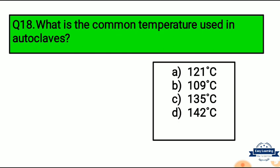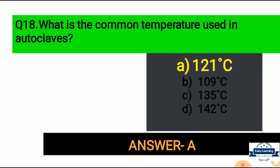Question 18: What is the common temperature used in the autoclave? Option A: 121°C, Option B: 109°C, Option C: 135°C, Option D: 142°C. The common temperature used in the autoclave is Option A, 121 degrees centigrade.